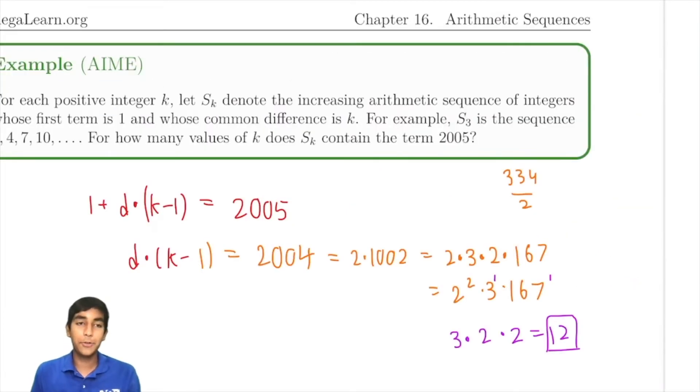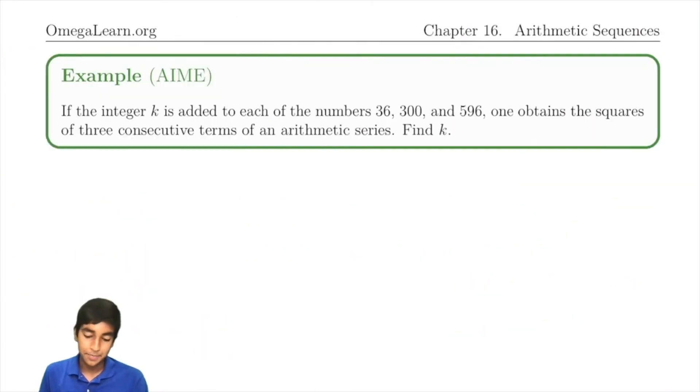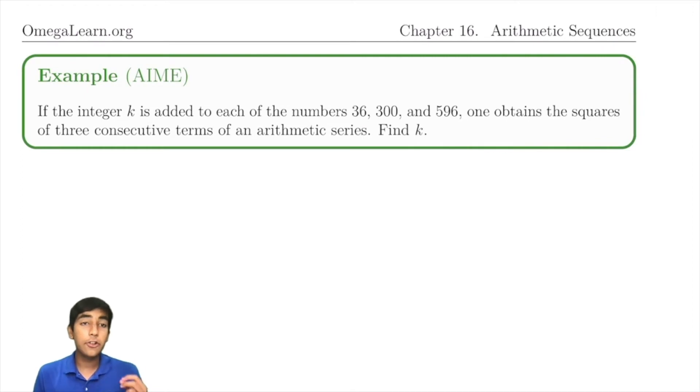Now, we're going to move on to a harder problem from the AIME. If the integer k is added to each of these numbers, 36, 300, 596, one obtains the squares of three consecutive terms in an arithmetic series. Find k.